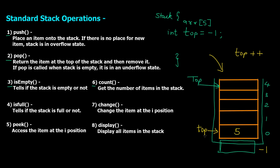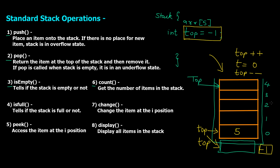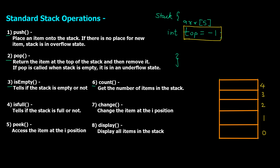Note that 'top' is not a pointer — we have pointers in C++ but this is a simple variable storing the location number. When we do pop, we do top--, so top goes back to minus one. Don't confuse the word 'pointing' — it's not a pointer, just a variable. For other operations like isEmpty, isFull, count, change, peek, and display, we'll extensively use this top variable.